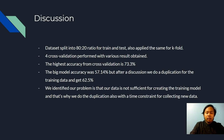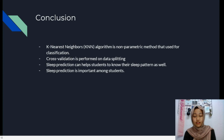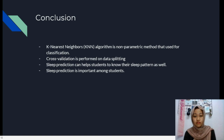Moving to the conclusion and recommendation: the K-nearest neighbors (KNN) algorithm is a non-parametric method used for classification. KNN uses available data as the model to perform the prediction process. To develop a better classification model, we performed cross-validations on the data splitting to ensure model efficiency. Sleep prediction can help students know their sleep pattern and improve their performance in studies. Sleep prediction is very important among students as it helps them plan and schedule their sleep to be more productive and energized. Thank you.